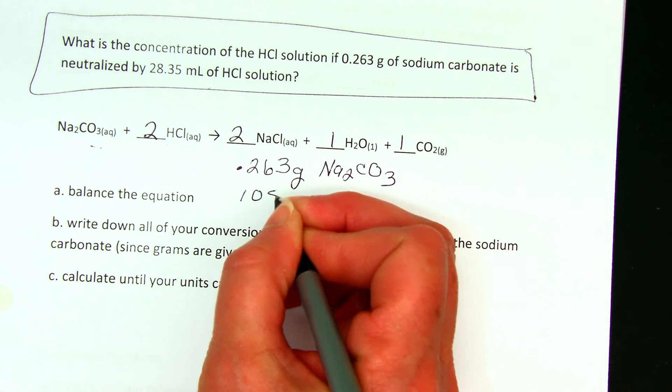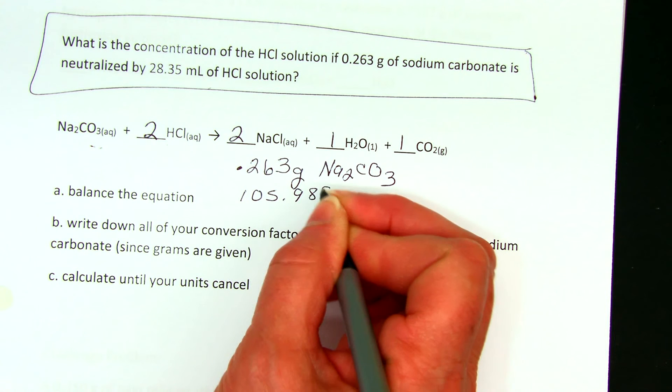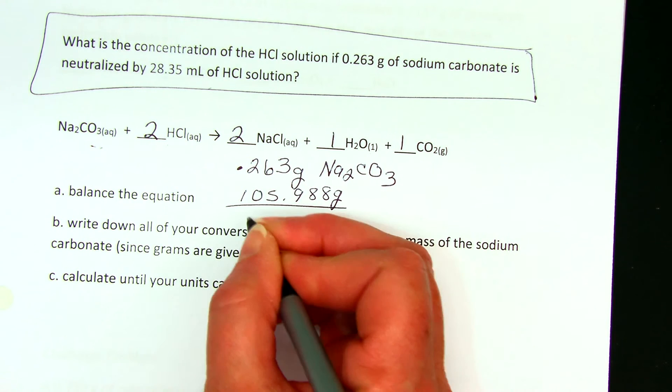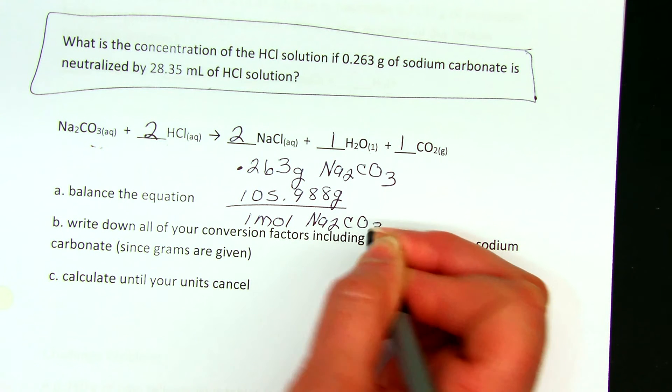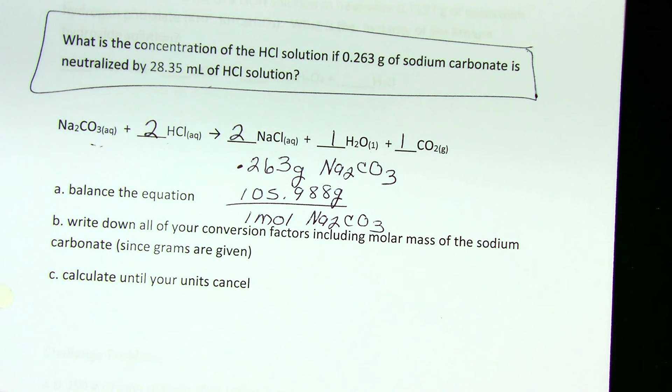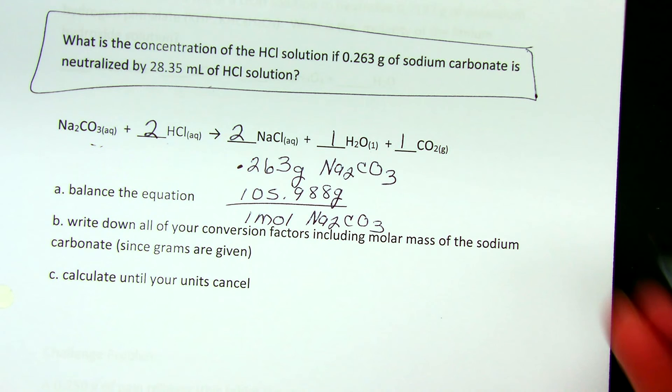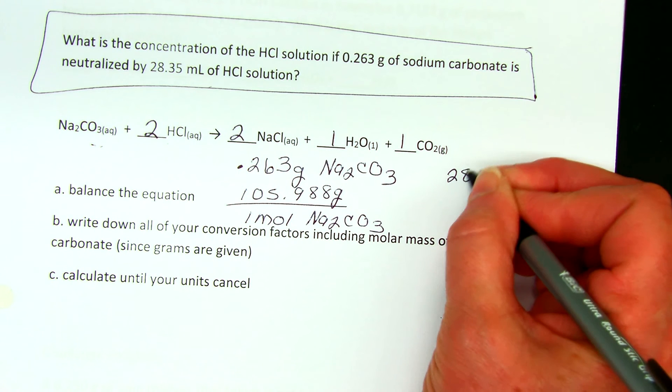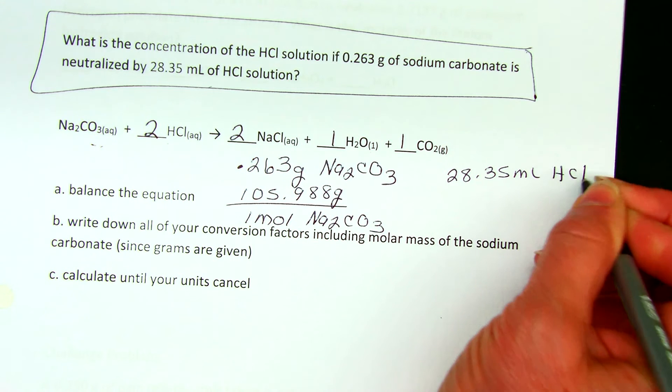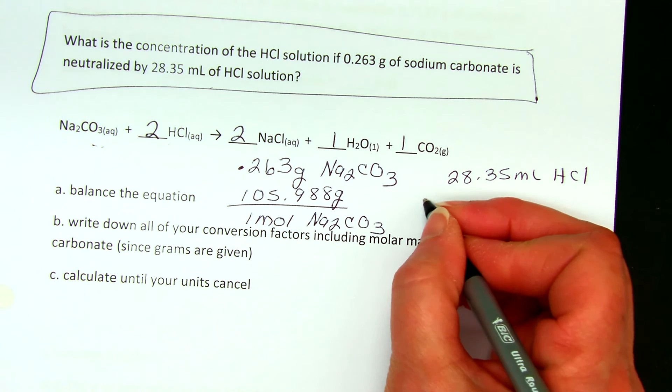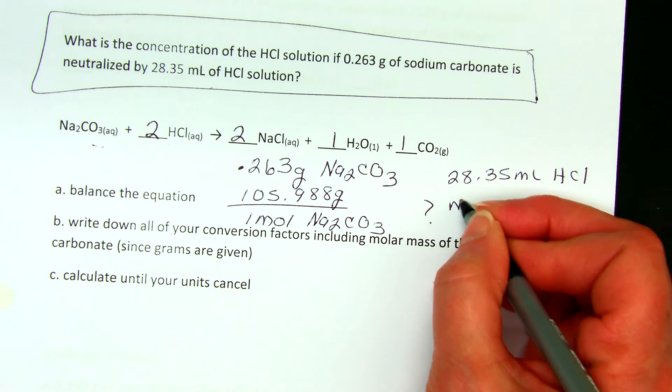So I grab my periodic chart and I write this down: 105.988 grams is one mole of sodium carbonate. Now if I look at the hydrochloric acid, I know that I have 28.35 milliliters of HCl, and I'm asked what is the concentration.